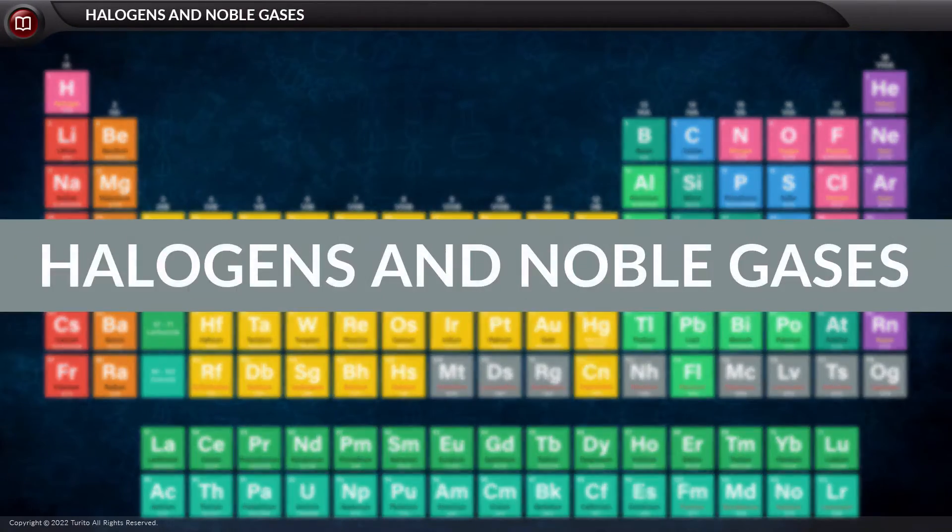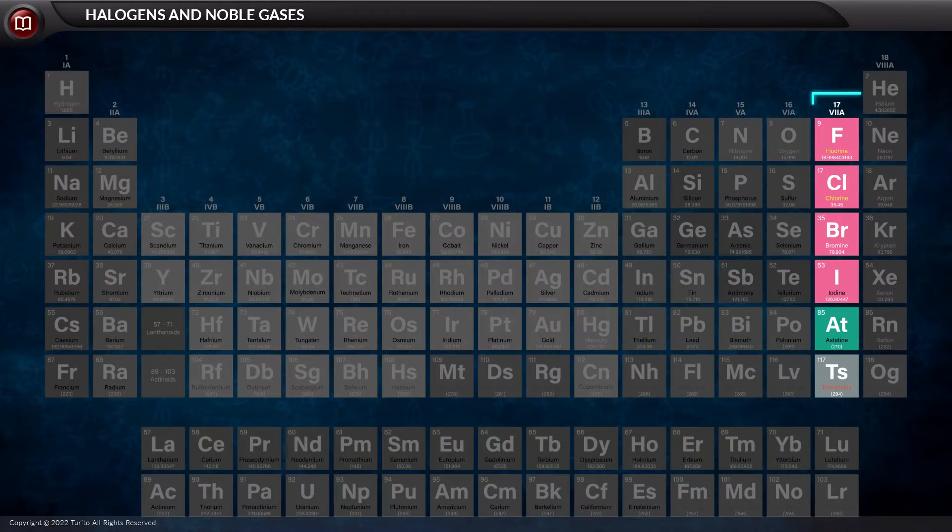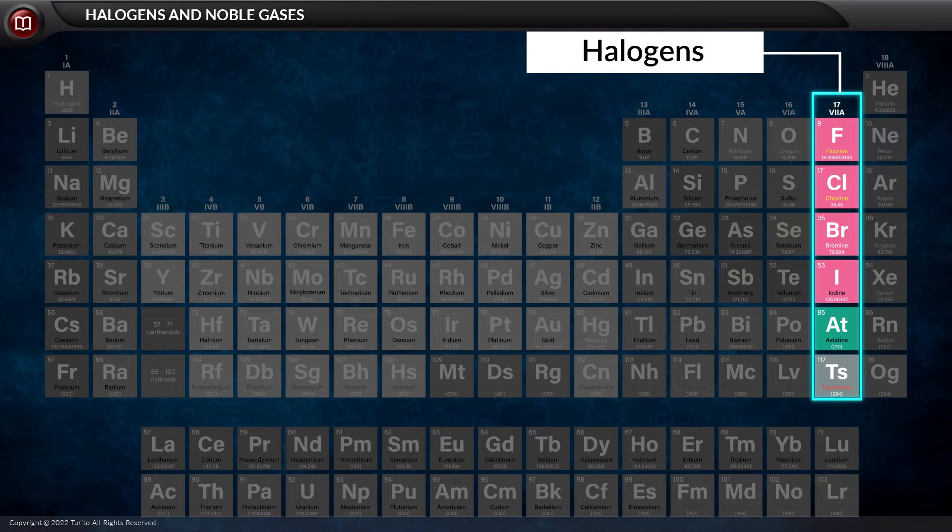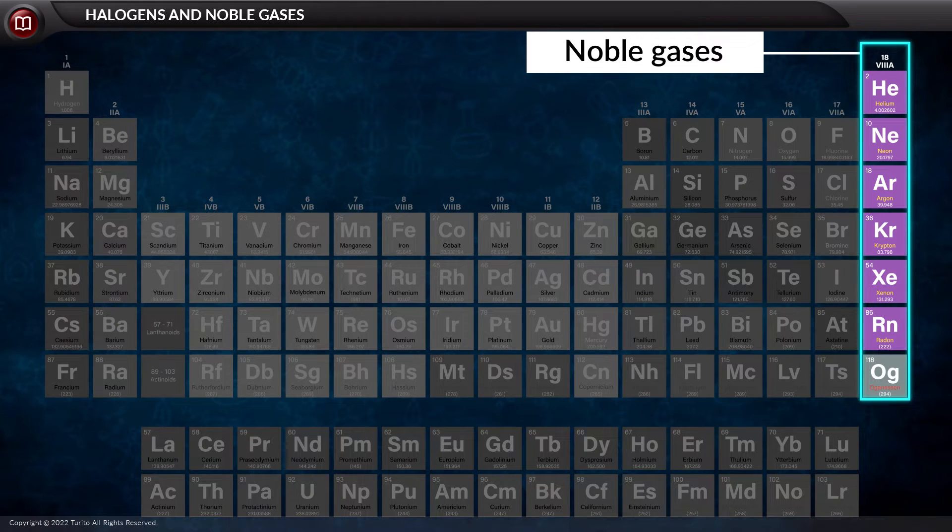In this video, let us speak about halogens and noble gases today. Do you know where these halogens and noble gases are located? Well, the halogens are present in Group 17 and noble gases are present in Group 18 of the modern periodic table.